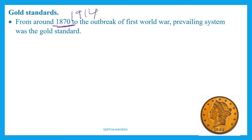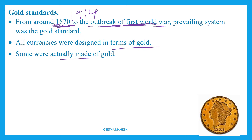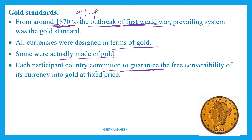That means from around 1872 up to the outbreak of the First World War, the gold standard existed. During that period, currencies were designed in terms of gold, and a few countries' currencies were actually made up of gold. All countries that participated in international trade committed to guaranteeing full convertibility of their currency into gold at a fixed price.